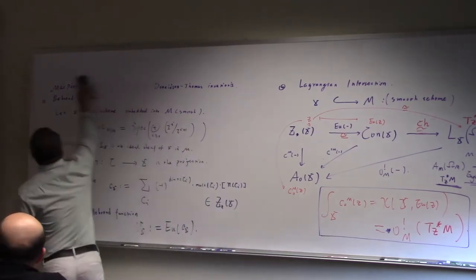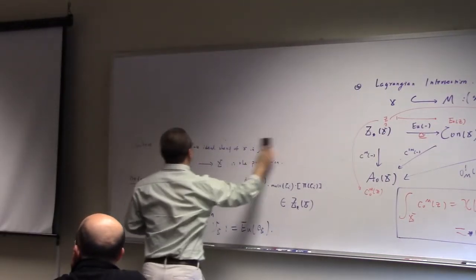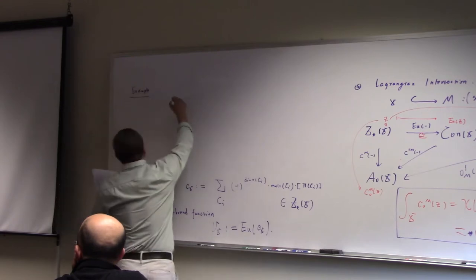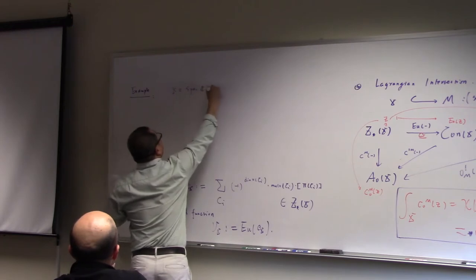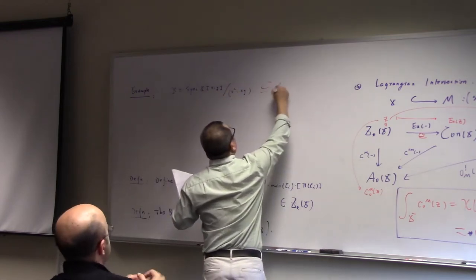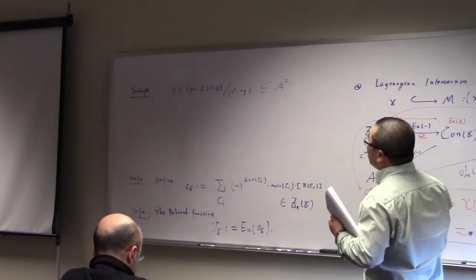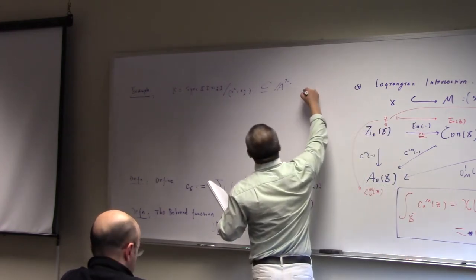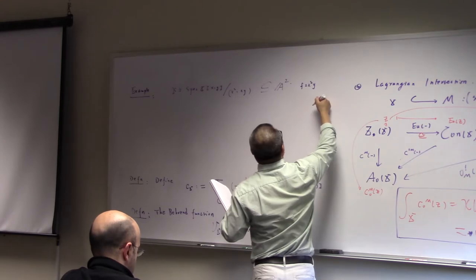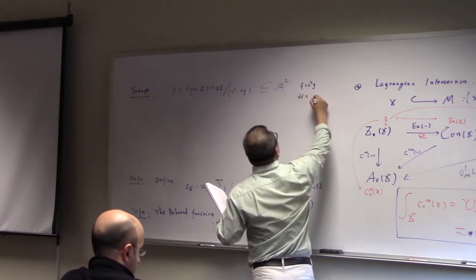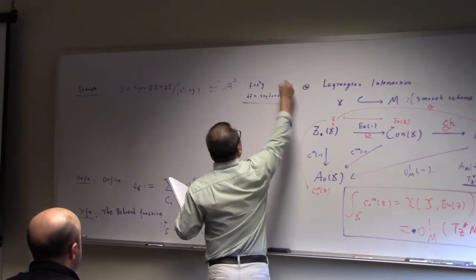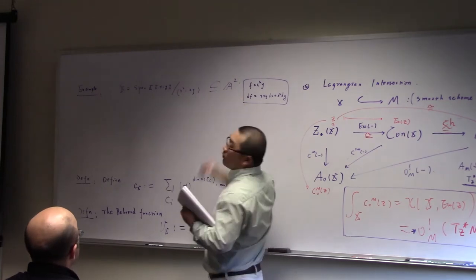Look. If I do some local calculation — let X be the following scheme. This would belong to A², and the ideal is given by (x², xy). Why I did this? Because I used it later. Because x²·xy is really x²·y. If F is this, defined on A², then dF is 2xy·dx + x²·dy. So X is really the critical locus of F.